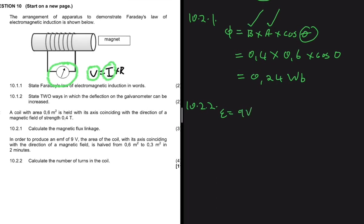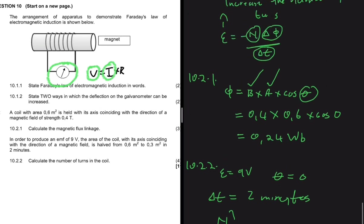Problem-solving 101: EMF equals 9 volts. The coil's axis still coincides with the magnetic field direction, so theta equals zero. The area is halved from 0.6 to 0.3 in two minutes, so delta t equals 2 minutes. The question asks us to calculate the number of turns N in the coil.